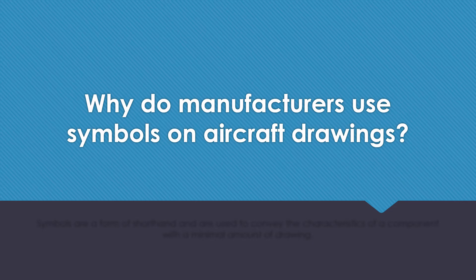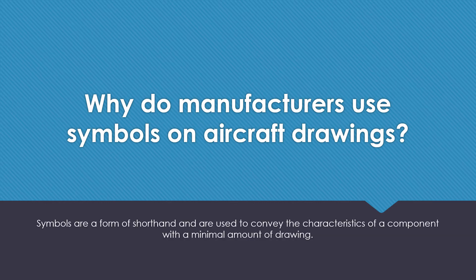Why do manufacturers use symbols on aircraft drawings? Symbols are a form of shorthand and are used to convey the characteristics of a component with a minimal amount of drawing.